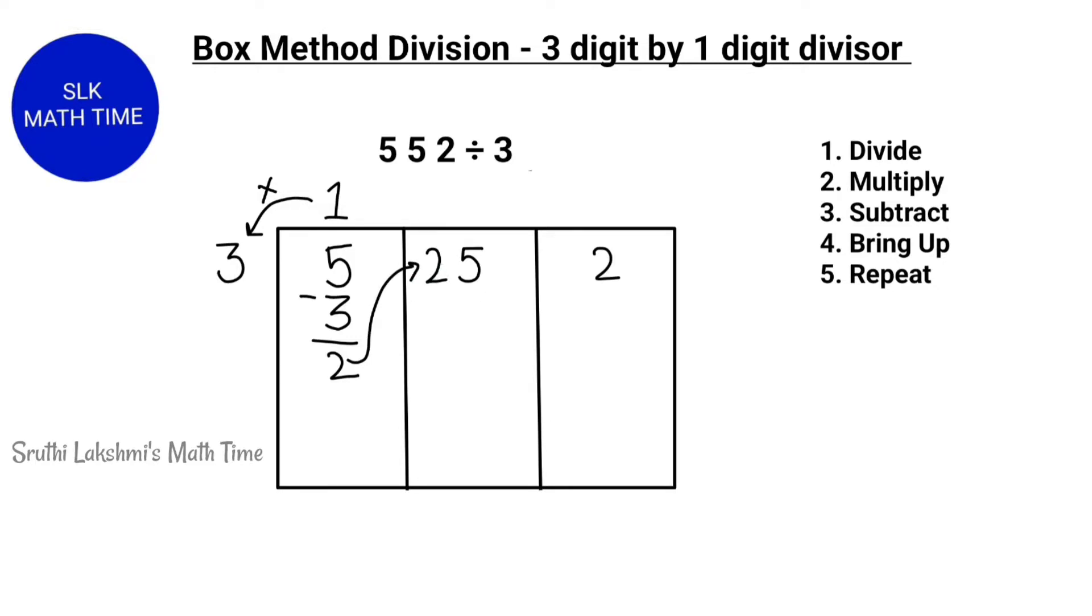So, 25. How many 3's can fit in 25? 8 threes can fit in 25. So, 8 times 3 is 24. 25 minus 24 is 1. Now, we bring up this 1 over here and continue this process. So, 3 times 4 is 12. 12 minus 12 is 0.